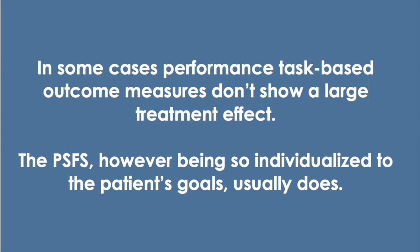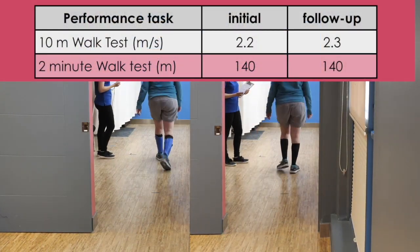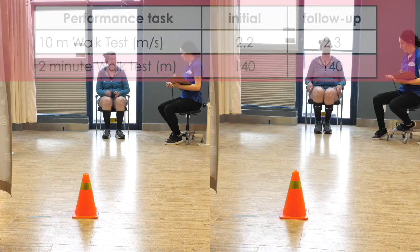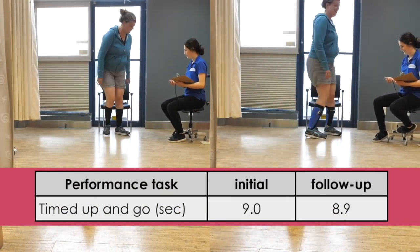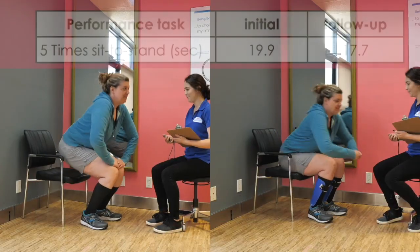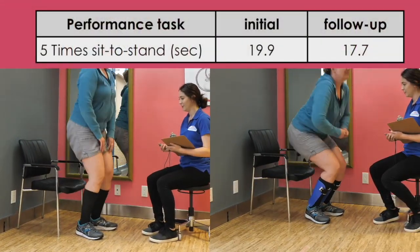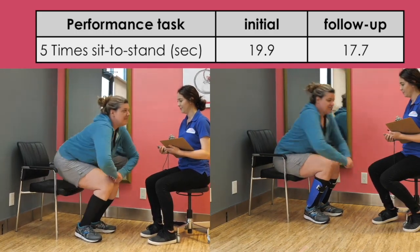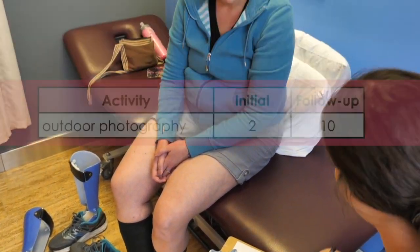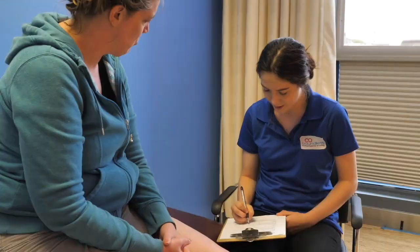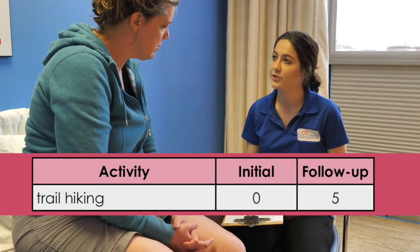In some cases, performance task-based outcome measures don't show a large treatment effect. The Patient Specific Functional Scale, however, being so individualized to the patient's goals, usually does. In this particular patient, a 10-meter walk test and two-minute walk test showed little difference. Similarly, the timed up and go and five times sit-to-stand tests showed little difference between the initial and follow-up episodes.